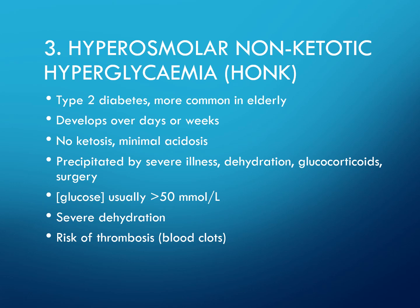The third cause of coma is hyperosmolar non-ketotic coma, which occurs in type 2 diabetes and is more common in the elderly. It develops over days or weeks. There is no ketosis and minimal acidosis. It is precipitated by severe illness, dehydration, glucocorticoids, or surgery. Glucose is usually greater than 50 millimolar, and there is severe dehydration and a risk of thrombosis.